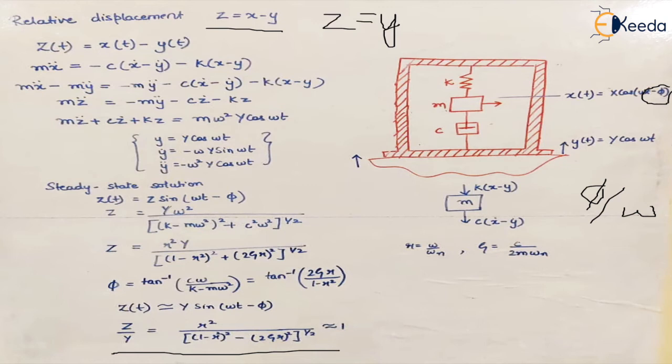What is important is that if this ratio z upon y is equal to 1, that means r, which is ω upon ωn, this value has to be large. Now ω is fixed. That means for any vibrating system, ω is fixed, which means what we can change is the natural frequency of the vibrating system. For r to be large, ωn has to be very low.